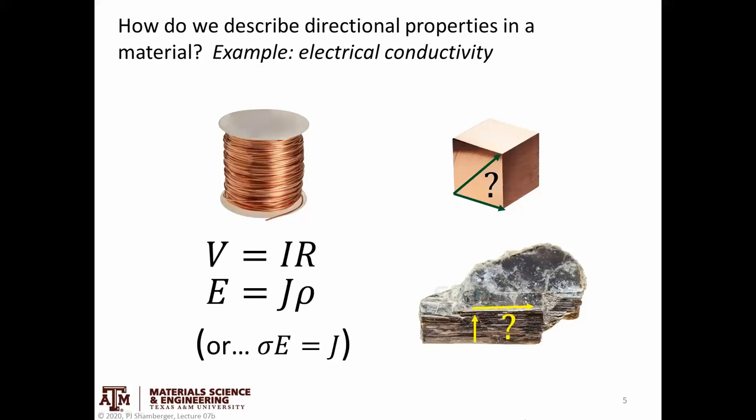But let's think about something that is very anisotropic. Let's think about a material like mica that is a 2D, a layered material. And the same thing could be applied to graphite or any other layered material.